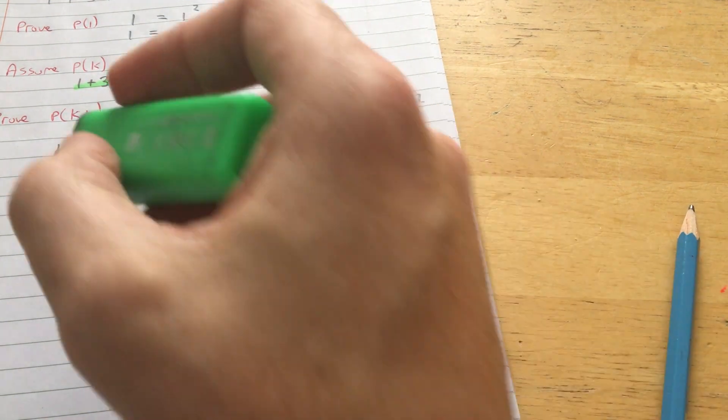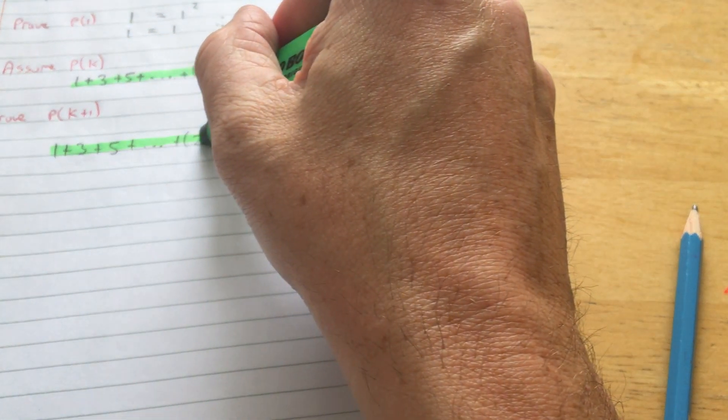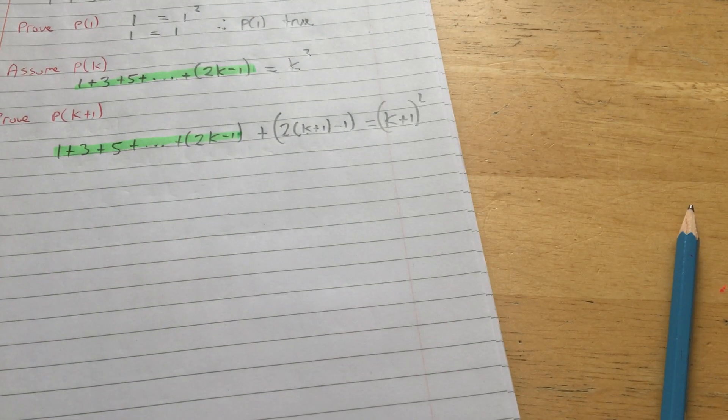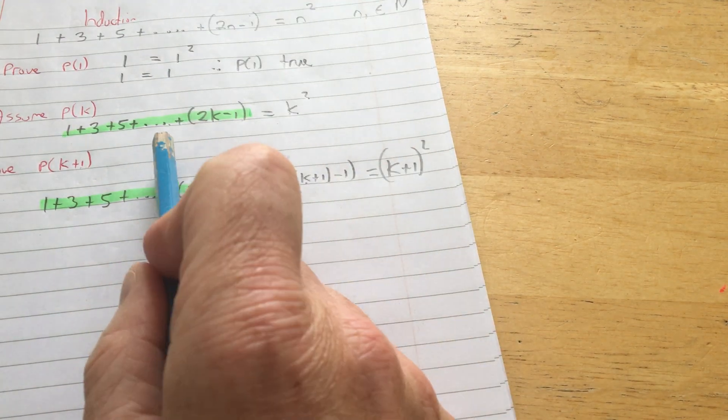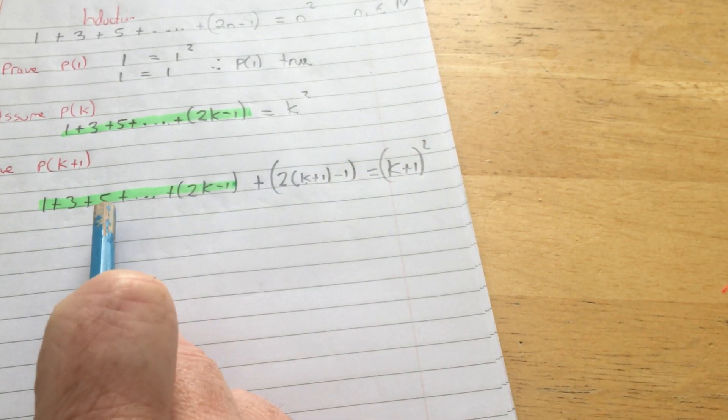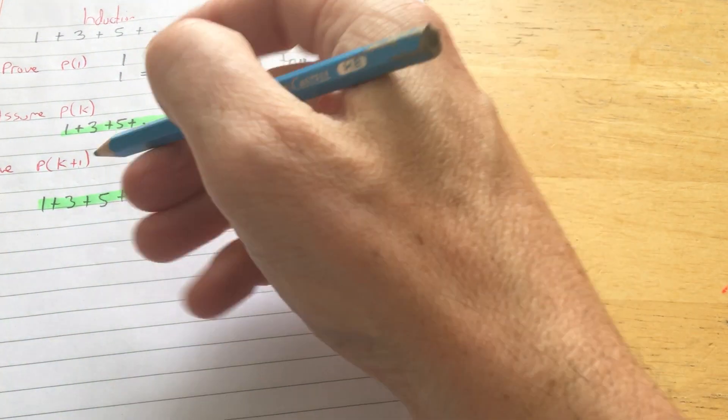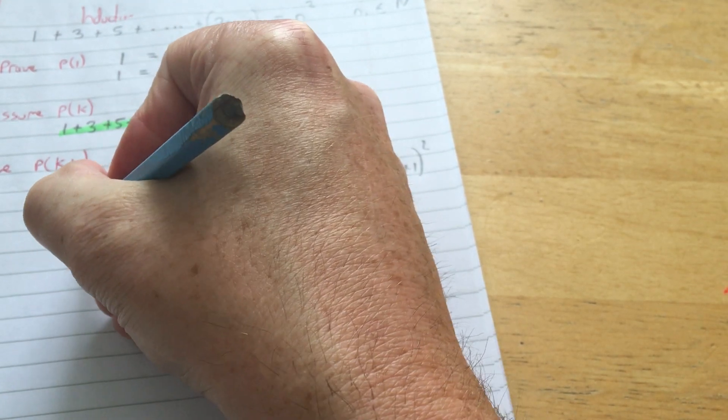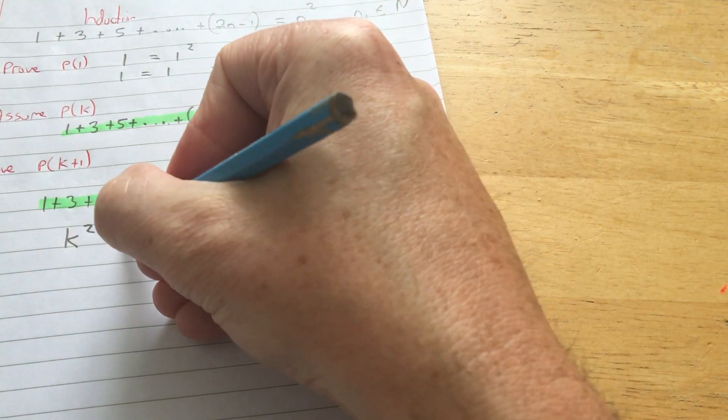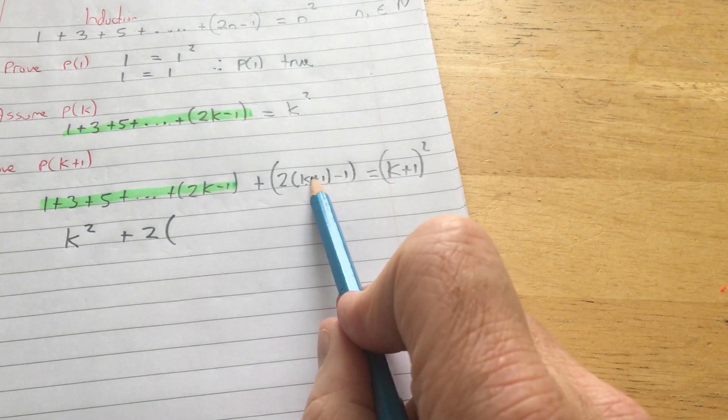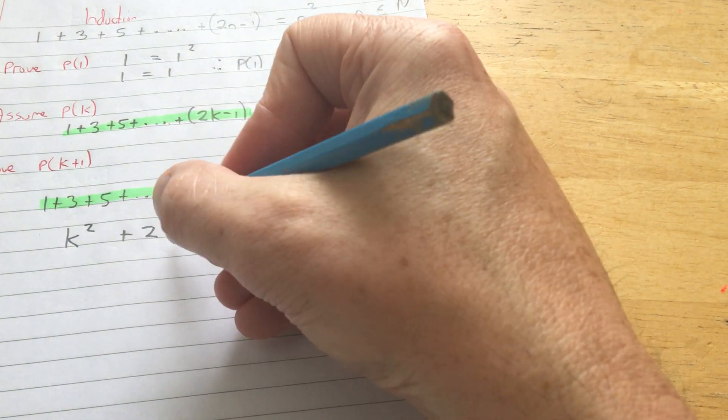And here's this expression again. So if that's the same as k squared, then so is this. So I can remove that and replace it with k squared. So k squared plus, and I'm going to tidy up in here, 2 times k is 2k.